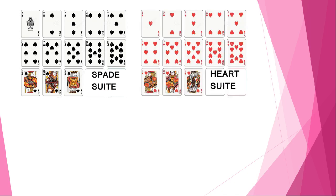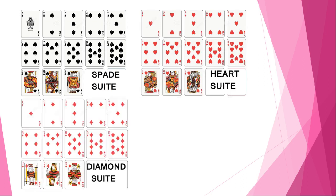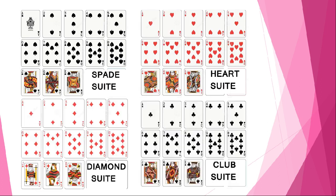Each suit is identical — if you know about the spade suit, it is applicable to the heart suit also. The heart suit looks the same but has the heart symbol instead of spade. Next is the diamond suit, same structure but with the diamond symbol. The last one is the club suit.